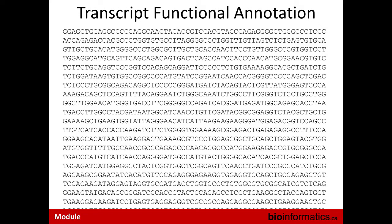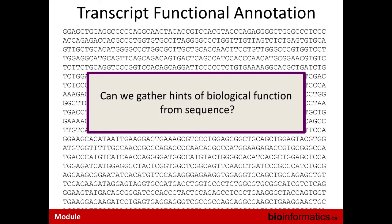When we do a transcript assembly, we end up with a FASTA file containing our transcript sequences — essentially strings of nucleotides. We need to figure out why this transcript is important, functionally what it represents, what it's doing. Can we gather hints of biological function from this raw sequence data? There are a couple of ways of going about doing that.